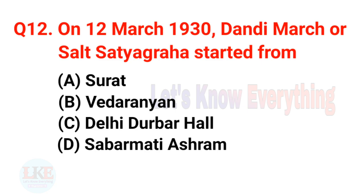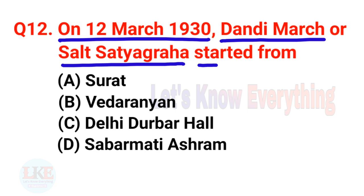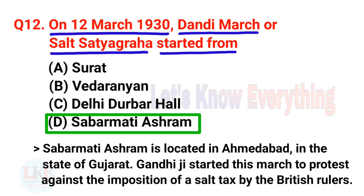Question number 12: On 12th March 1930, the Dandi March or Salt Satyagraha started from Sabarmati Ashram. Sabarmati Ashram is located in Ahmedabad in the state of Gujarat. Gandhiji started this march to protest against the imposition of a salt tax by the British rulers.